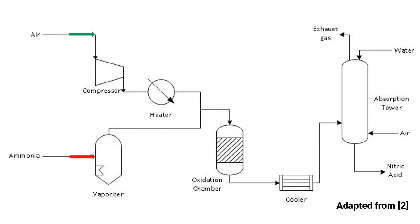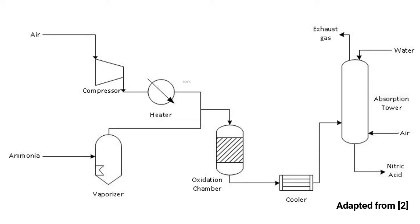Initially, air which contains oxygen is compressed and preheated to about 300 degrees Celsius by passing through a heat exchanger. Meanwhile, ammonia gas is continuously vaporized from liquid ammonia in a steam-heated evaporator. Then the ammonia-air mixture is passed through the oxidation chamber, which contains a platinum catalyst.